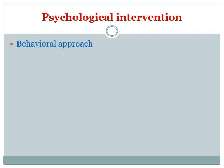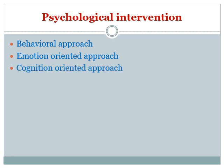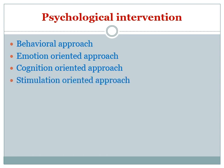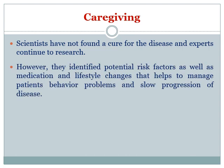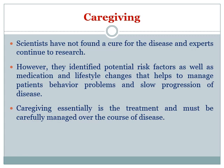There are several psychological interventions for the management of Alzheimer's disease, including behavioral approaches, emotion-oriented approaches, cognition-oriented approaches, and stimulation-oriented approaches. Caregiving to patients is also a most important approach. Scientists are still continuing research to find a cure, but have not yet found one. However, they have identified potential risk factors, medications, and lifestyle modifications that help manage patient behavior and slow down disease progression.